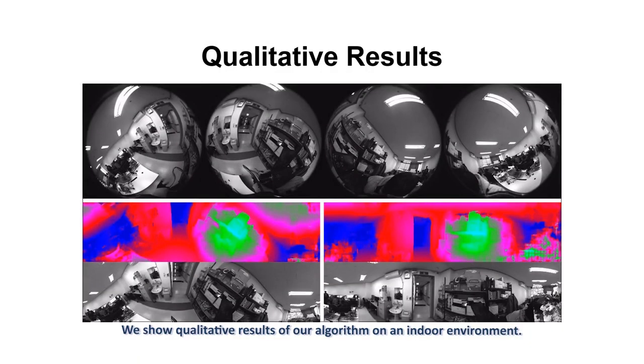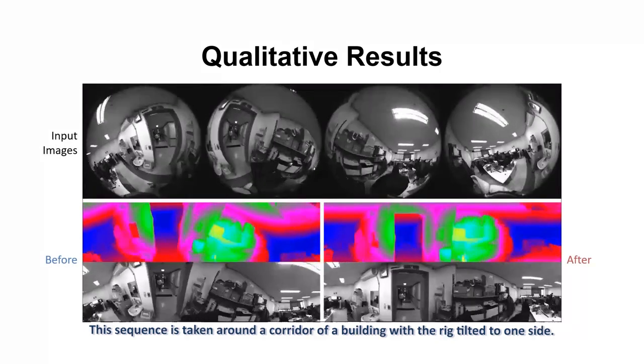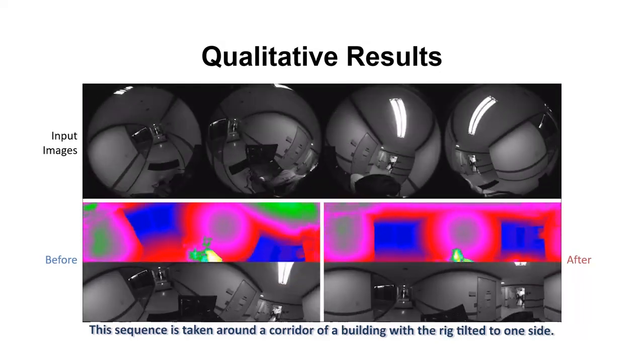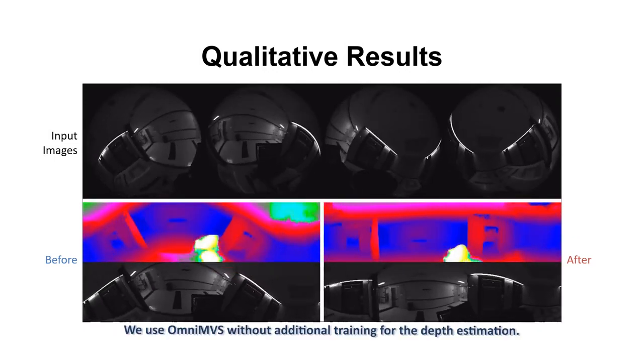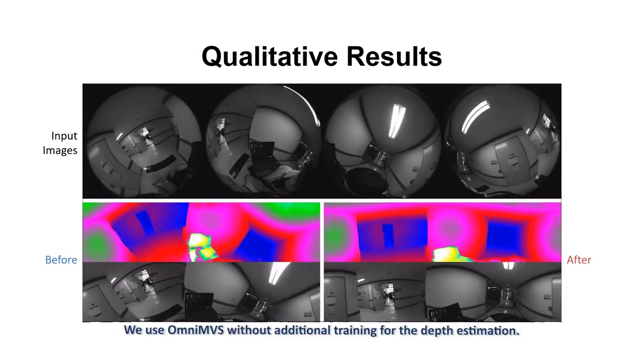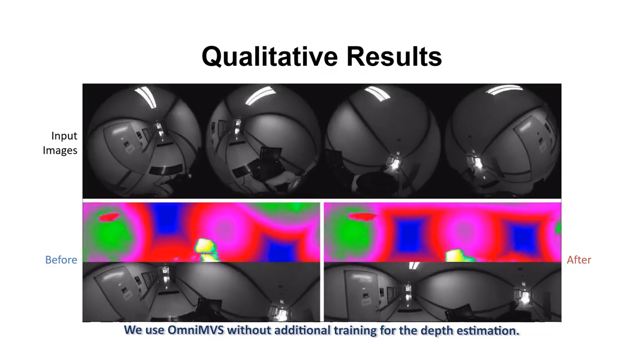We show qualitative results of our algorithm on an indoor environment. This sequence is taken around a corridor of a building, with the rig tilted to one side. We use OmniMVS without additional training for the depth estimation.